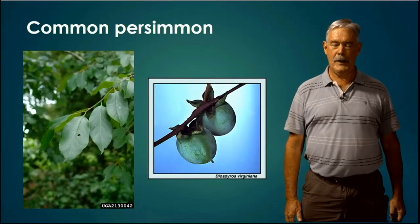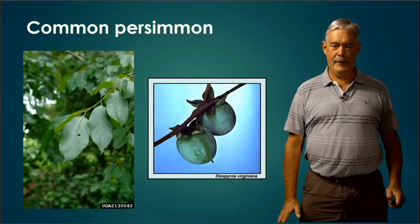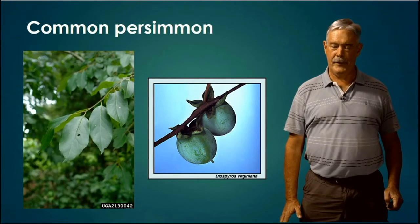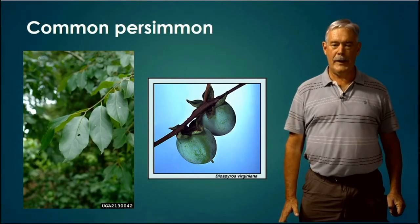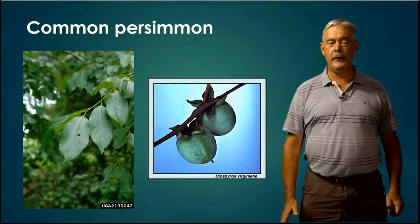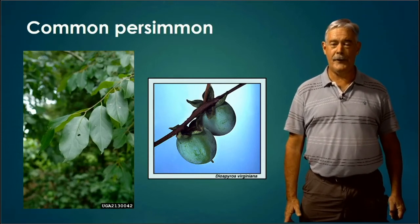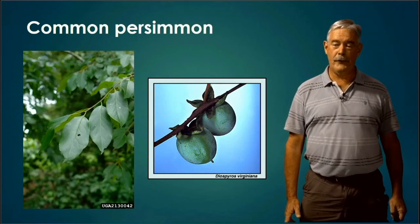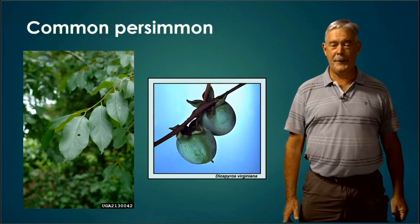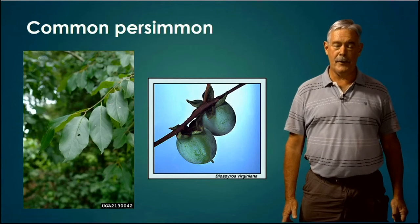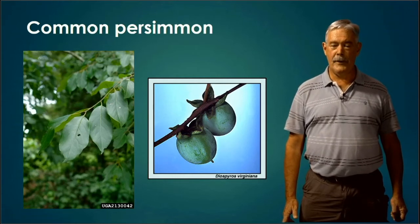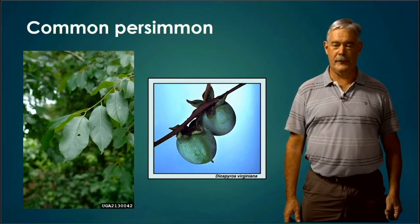Persimmon — if you ever get a wild persimmon fruit and it's not all the way ripe and you go to eat it, it will literally turn your mouth inside out. It is very astringent. When those get all the way ripe and turn an orangey color, they drop to the ground, often soft enough to split. And you eat one of those — it's one of the most wonderful fruits you'll ever eat.